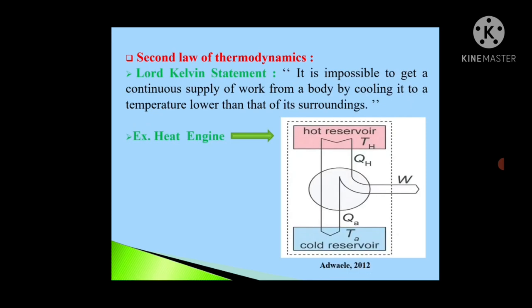Second law of thermodynamics. Now we will see Lord Kelvin's statement. It is impossible to get continuous supply of work from a body by cooling it to a temperature lower than that of its surrounding. From this it is very clear that source temperature must be higher than the surrounding temperature or that sink.